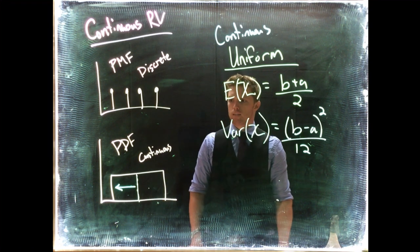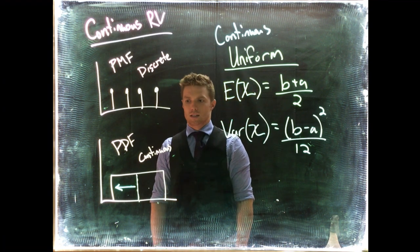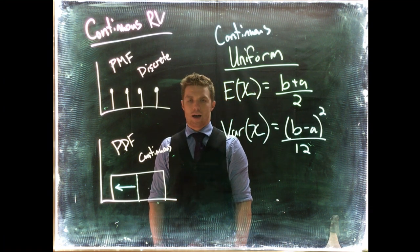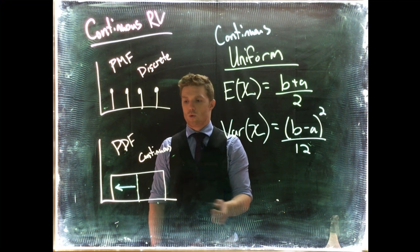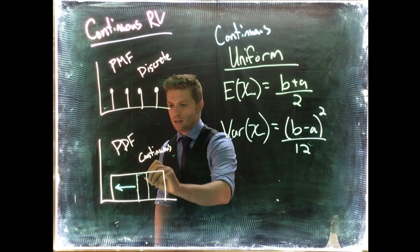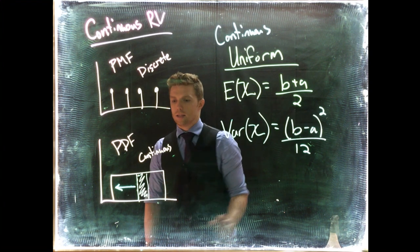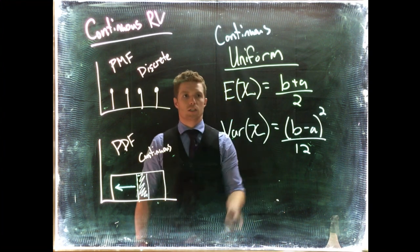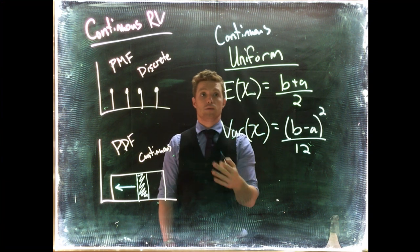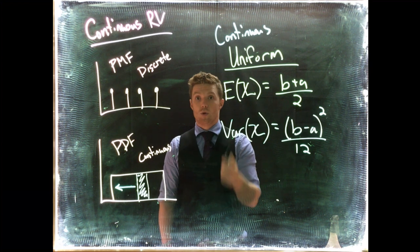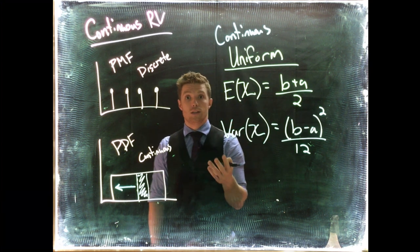that probability. So that's kind of the nuts and bolts of our uniform distribution. We can do all sorts of different questions, we can find the probability between two values, but really we just need to know: how do we know the expected value and variance for a uniform distribution?